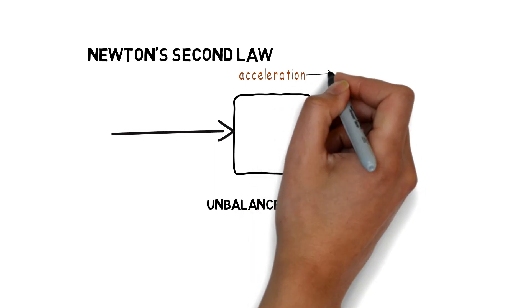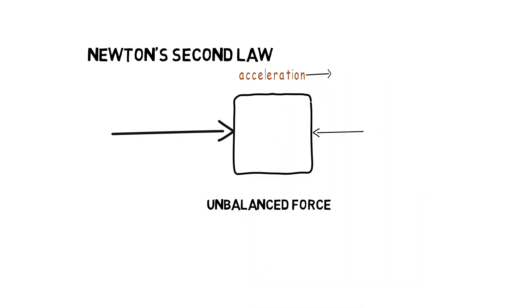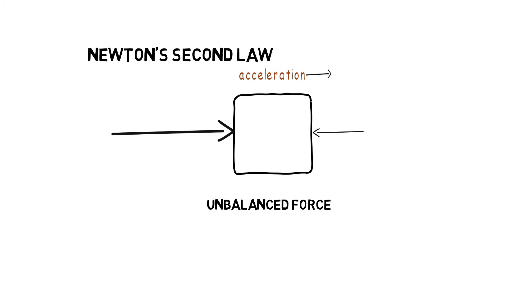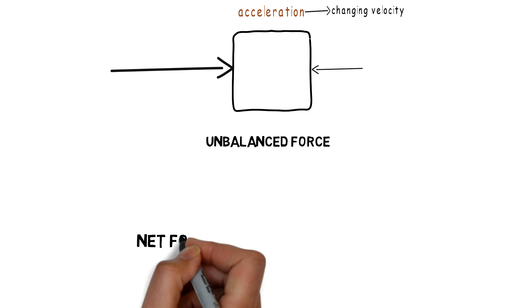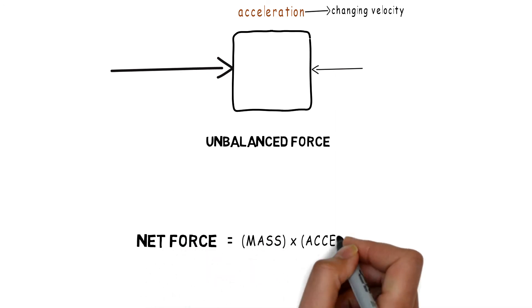If an unbalanced net force is acting on a body, it will tend to an acceleration of the body, which means the body will experience a change in velocity. Mathematically, it can be said that the net force is equal to mass times acceleration.